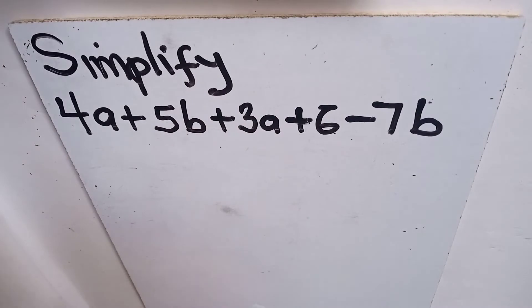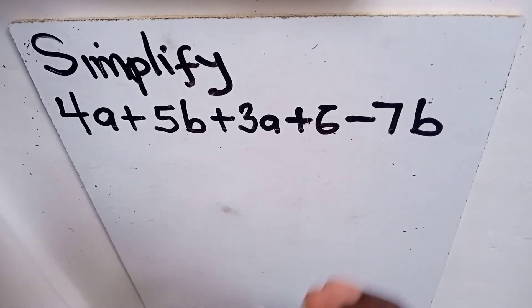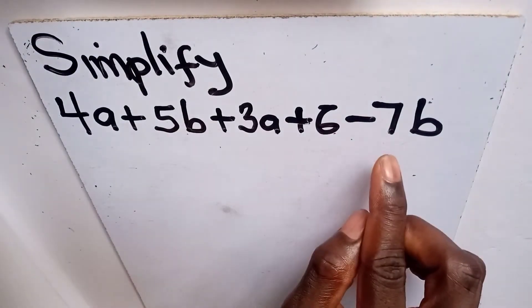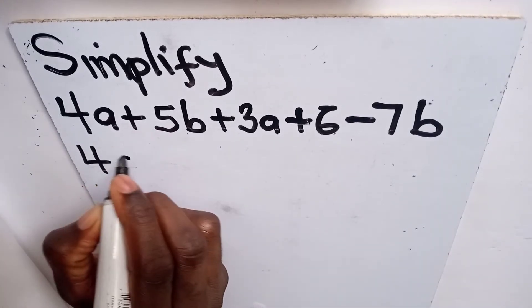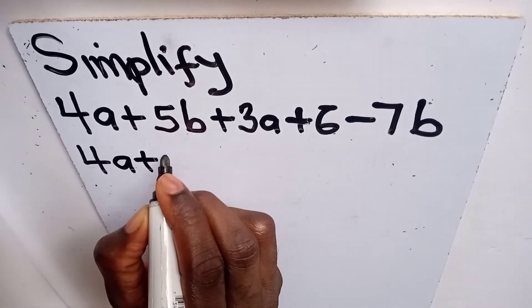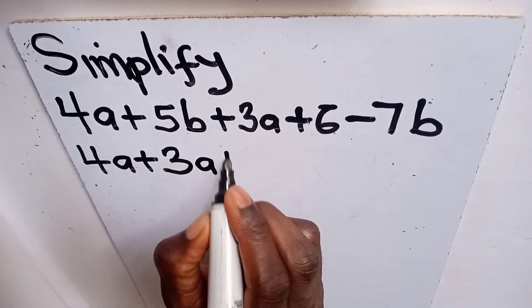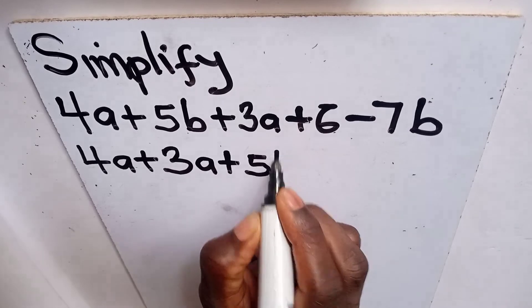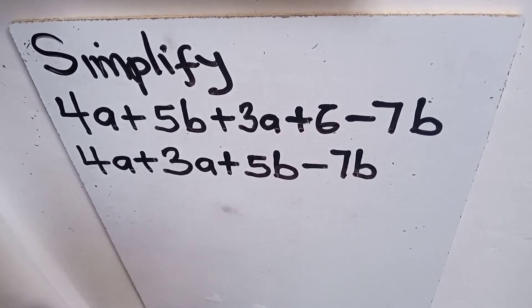When you check further, we have 5b and then negative 7b, so the coefficients of b in this expression are 5 and negative 7. Like terms are terms which have the same variables being multiplied by them. Now let's group the like terms: we have 4a plus 3a, then for b we have positive 5b minus 7b.